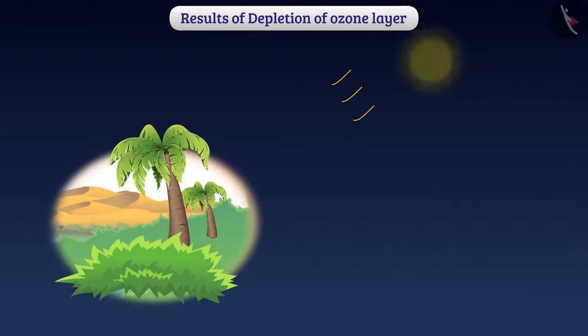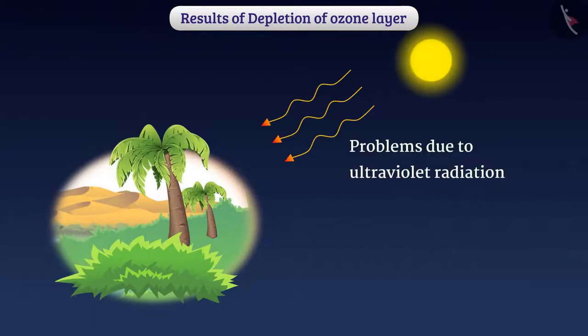Due to ultraviolet radiation in the terrestrial plants, problems in growth, flowering, and photosynthesis will arise. This will harm the entire environment.